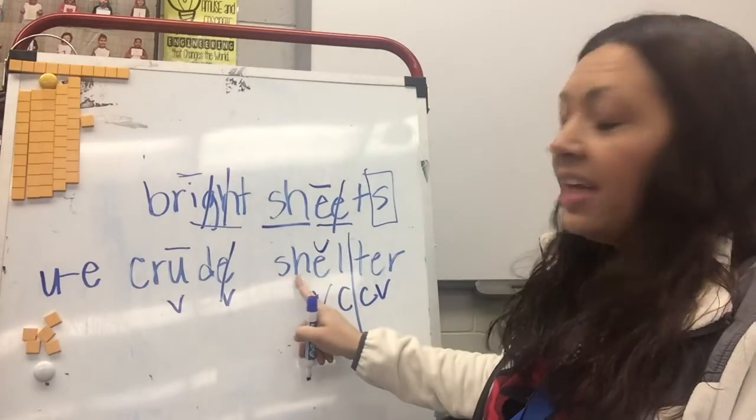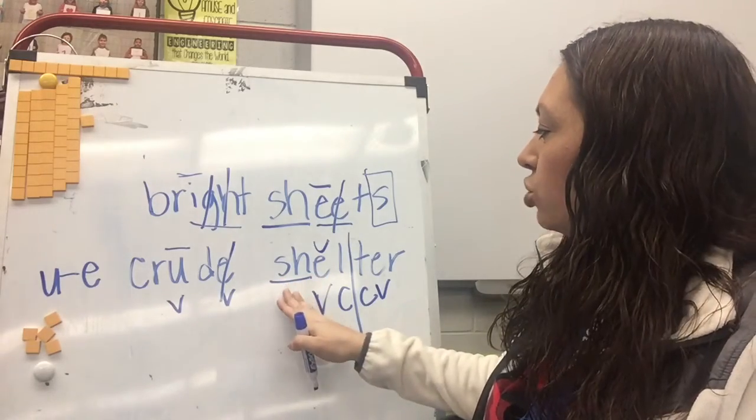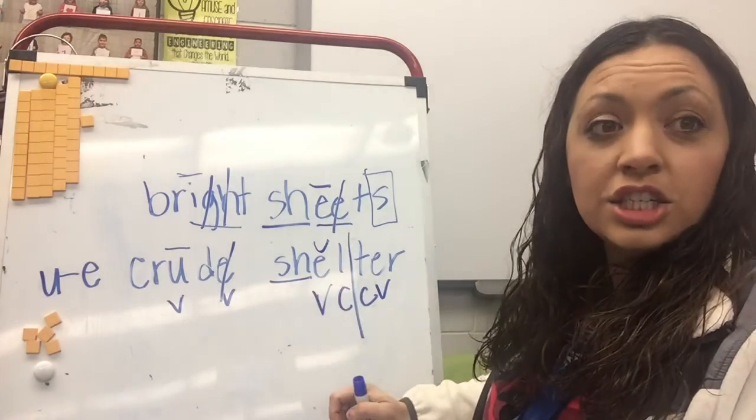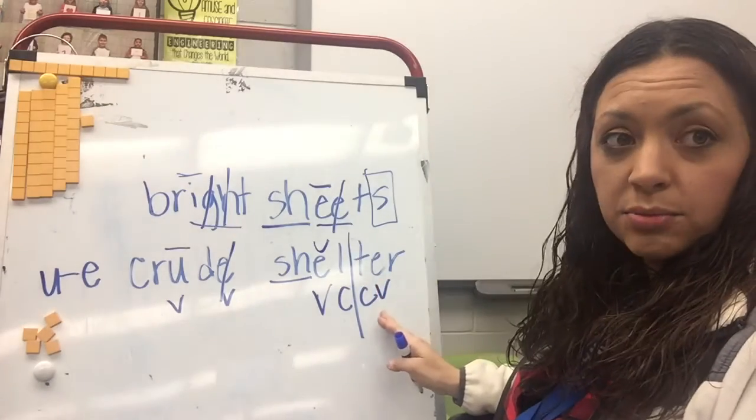Okay? So, and I've got that S-H, which I know is a digraph, so I'm going to underline it so it goes together. So I have SH-EL, SHELL. So my first syllable says SHELL. Then let's look at my next syllable.